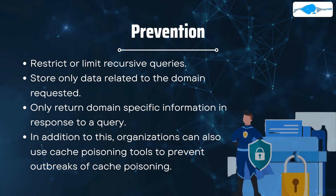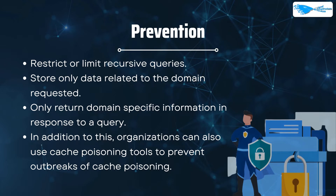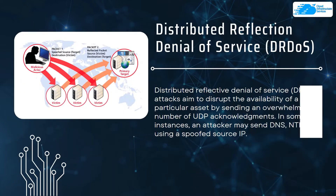To prevent DNS cache poisoning, you need to restrict or limit recursive queries, store only the data related to the domain requested, and return only domain-specific information in response to a query. In addition, organizations can also use cache poisoning tools to prevent outbreaks of cache poisoning.